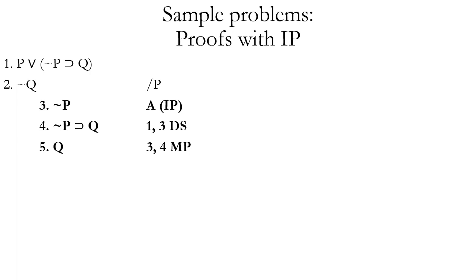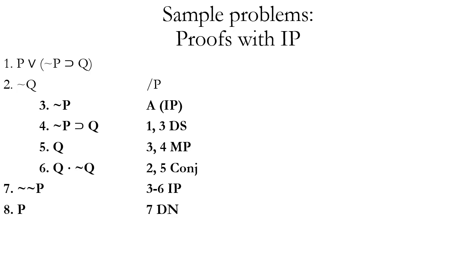Now can you see how we will generate our contradiction? If you use modus ponens on lines three and four, you can prove that Q is true. And notice that lines two and five now contradict each other. So we make a conjunction of lines two and five. Then we're ready to exit out of our indirect proof. Because we assumed tilde P, when we exit out we add another negation, ending up with tilde tilde P. The justification for this line is three through six with indirect proof. The final step is to use double negation on line seven to remove the two negations.